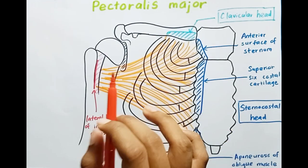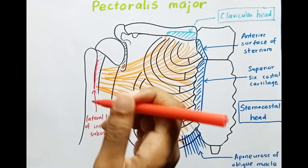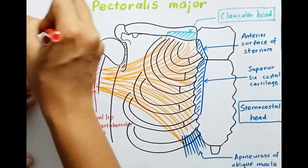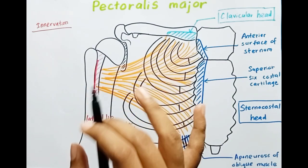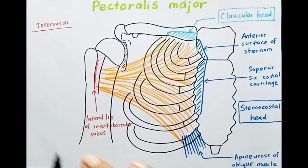Now let's talk about the innervation of this muscle. This muscle is innervated by the lateral pectoral nerve and the medial pectoral nerve.